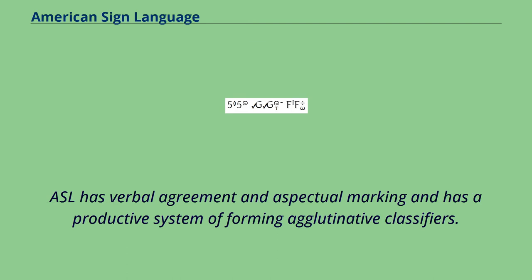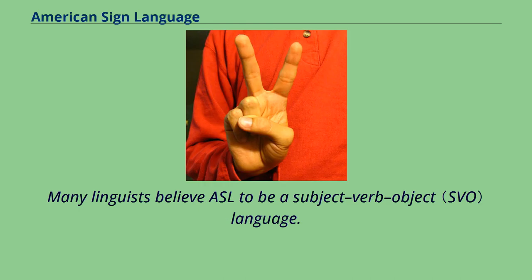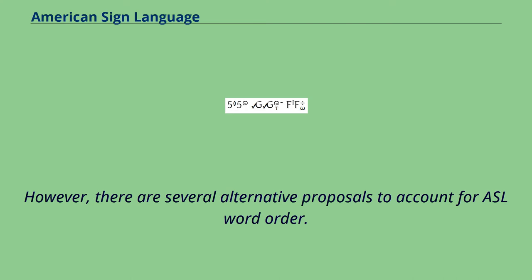ASL has verbal agreement and aspectual marking and has a productive system of forming agglutinative classifiers. Many linguists believe ASL to be a subject-verb-object language. However, there are several alternative proposals to account for ASL word order.